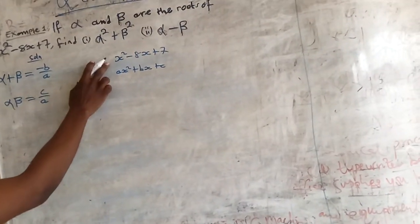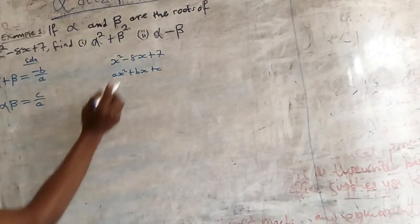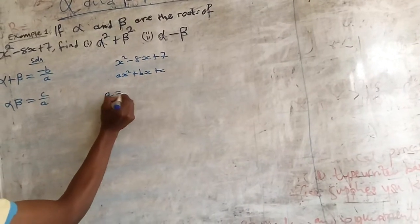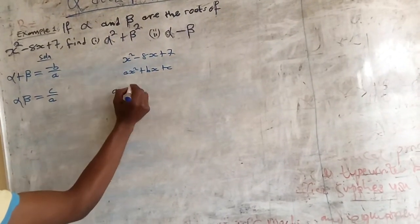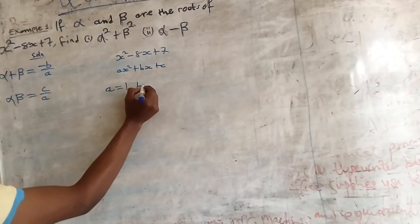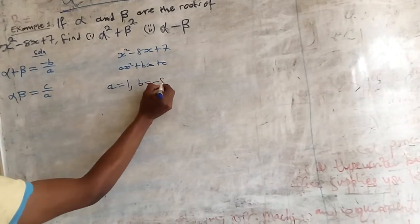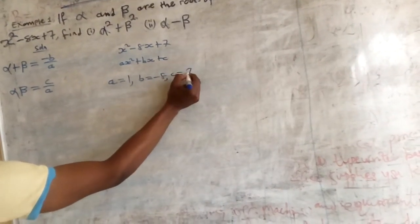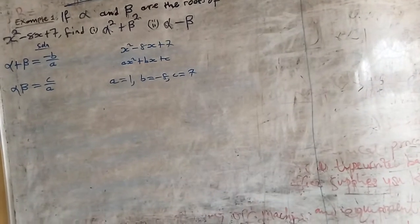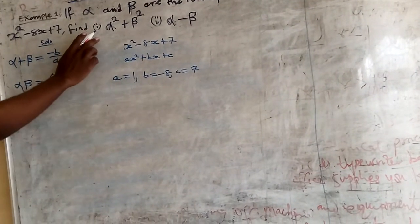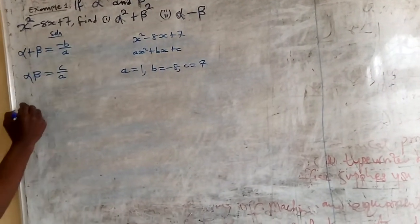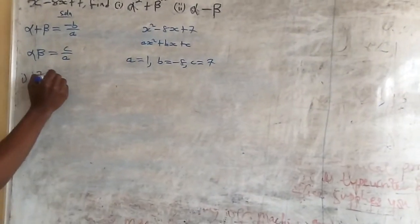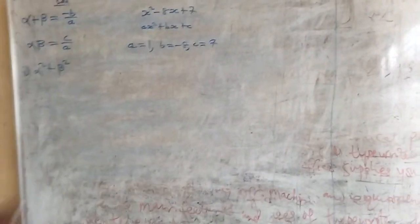So, from this expression, we are going to bring out a, b, and c. a is equal to 1, b is equal to minus 8, and c is equal to 7. So, the first question says find alpha squared plus beta squared.